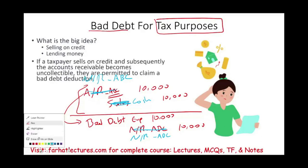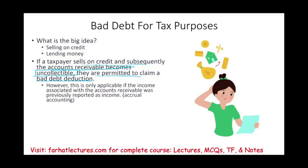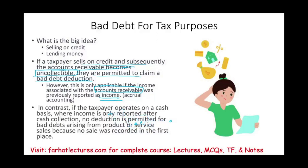If a taxpayer sells on credit and the accounts receivable subsequently becomes uncollectible, they are permitted to claim a bad debt deduction — meaning the accounts receivable asset turns into a bad debt. Bear in mind this is only applicable if the income associated with the accounts receivable was previously reported as income, meaning you debited accounts receivable and credited sales so the income was already included.